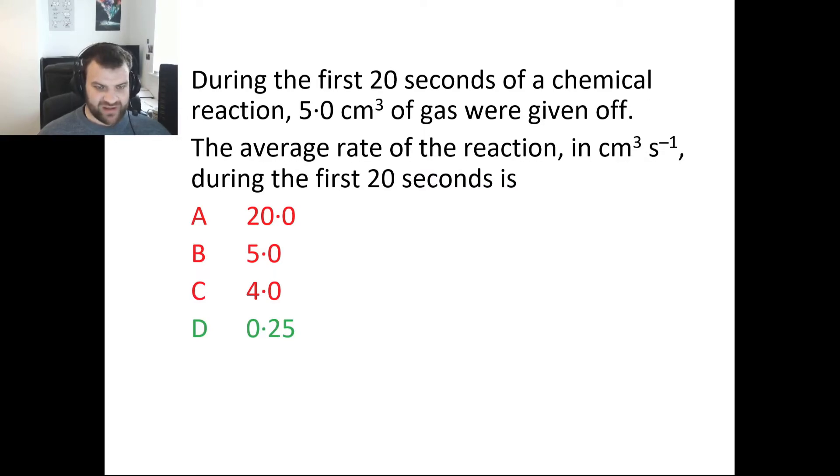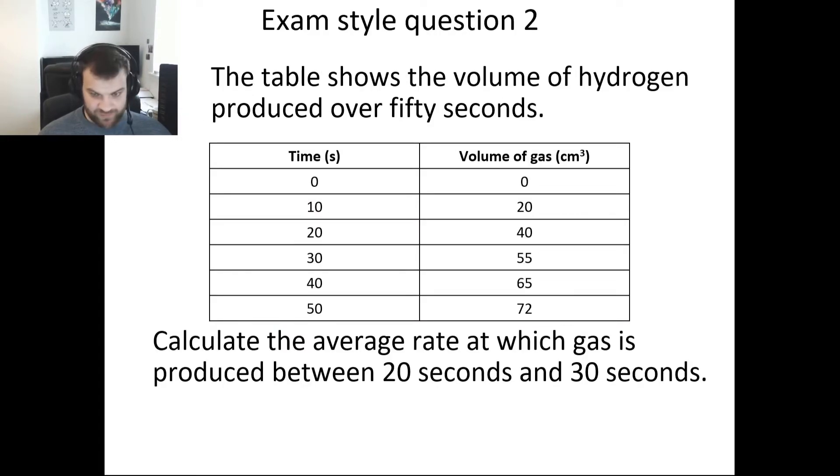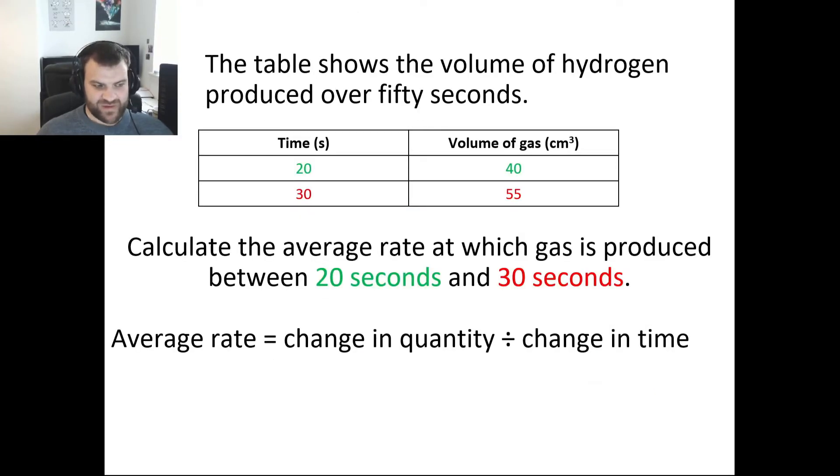Another way they can give you is they can give your information in a table and ask you to pick out the relevant pieces of information. The question talks about the average rate between 20 and 30 seconds, so I'm looking at time 20 and time 30. We are now having to decide or work out the change in quantity. Well, at the first time we're at 40 centimeters cubed and we finish up at 55, and that is a difference of 15 centimeters cubed. The time it's taking, 10 seconds for that to happen, so it's 15 divided by 10, given as 1.5 centimeters cubed per second.